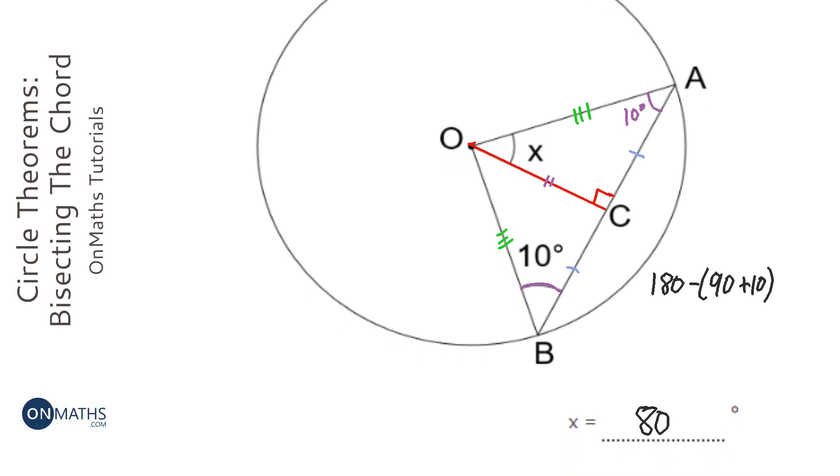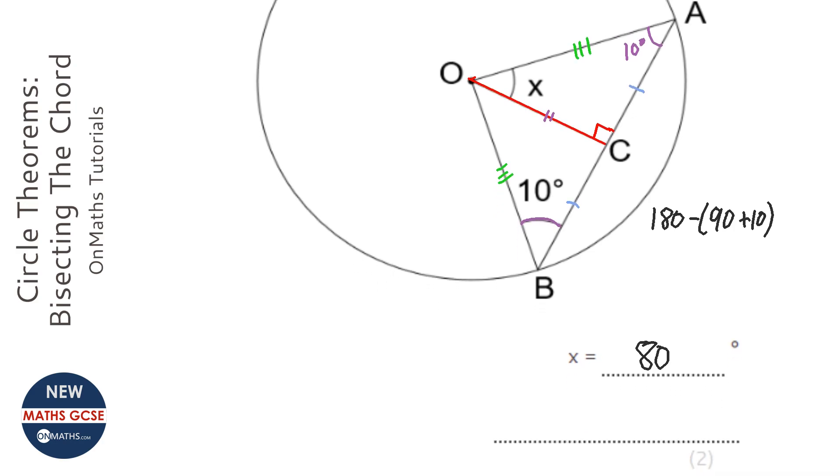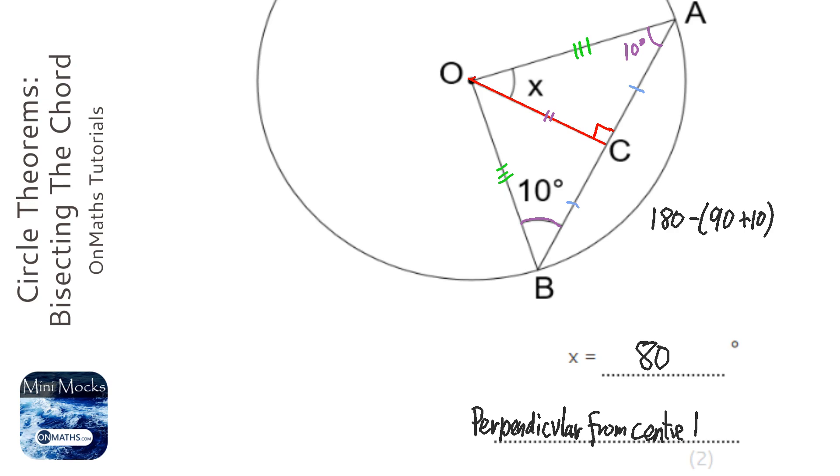So you need to write down the fact that the perpendicular from centre bisects the chord, and you also need to write down that the triangles therefore are mathematically congruent, or just congruent, and then you have to do angles in a triangle add up to 180 degrees. So I'm just going to write down the circle theorem, but you obviously need to write down the things I mentioned. So perpendicular from centre bisects the chord. And the chord is just AB.